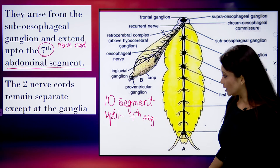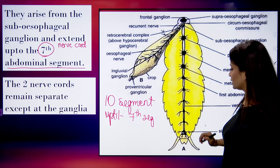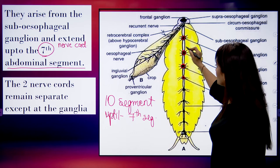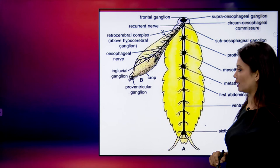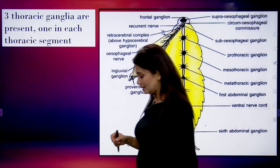The two nerve cords always remain separate, but they join together at the ganglions. Wherever ganglions are present, that is where their meeting point is; otherwise they remain separate. There are 10 pairs of ganglions in total.